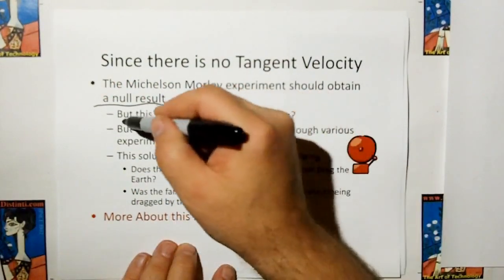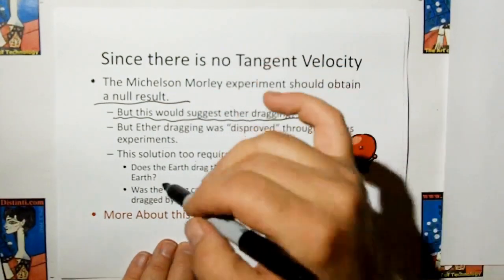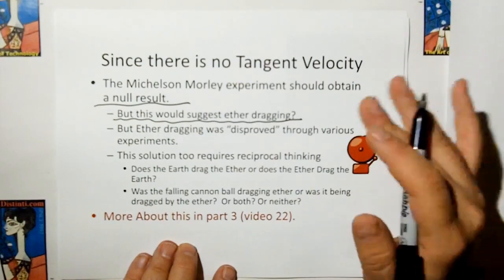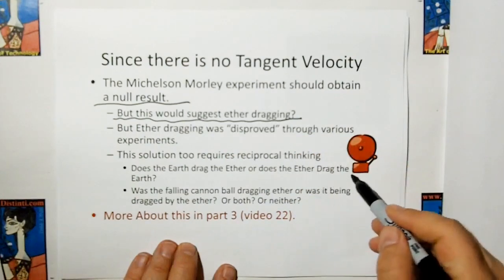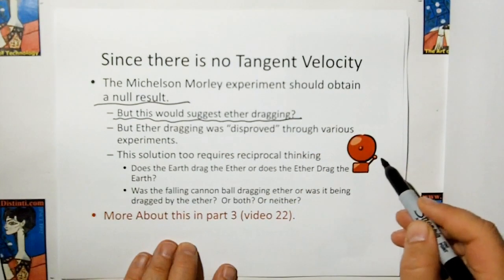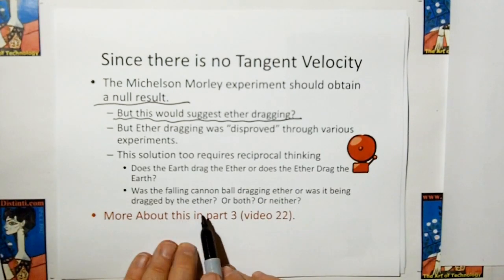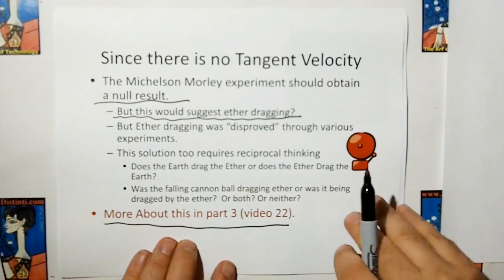But then this would suggest that there's such a thing as ether dragging. But ether dragging was disproved through various experiments in the past. But this solution, too, requires reciprocal thinking. Does the Earth drag the ether, or does the ether drag the Earth? Well, ask yourself, was the falling cannonball dragging the ether, or was it being dragged by the ether, or both, or neither? We're going to talk about this in video number 22.